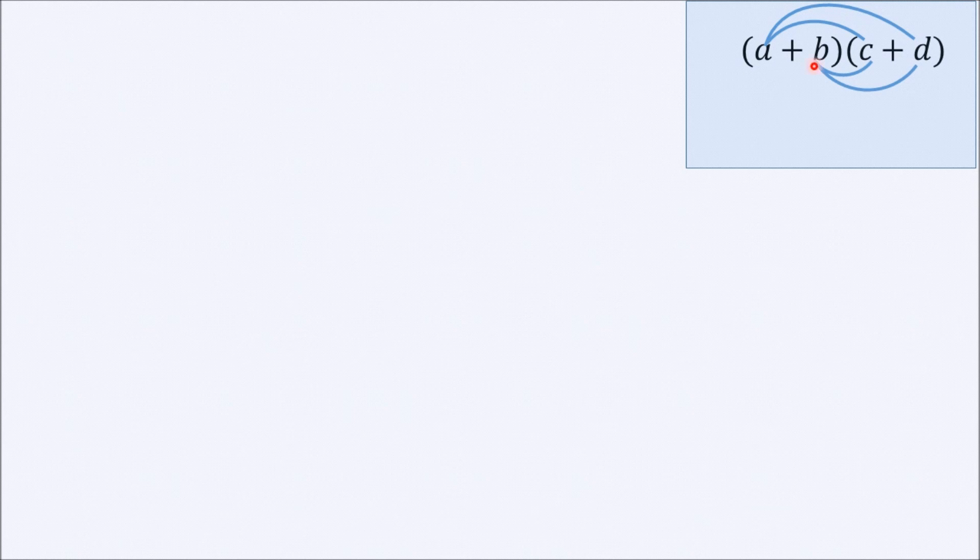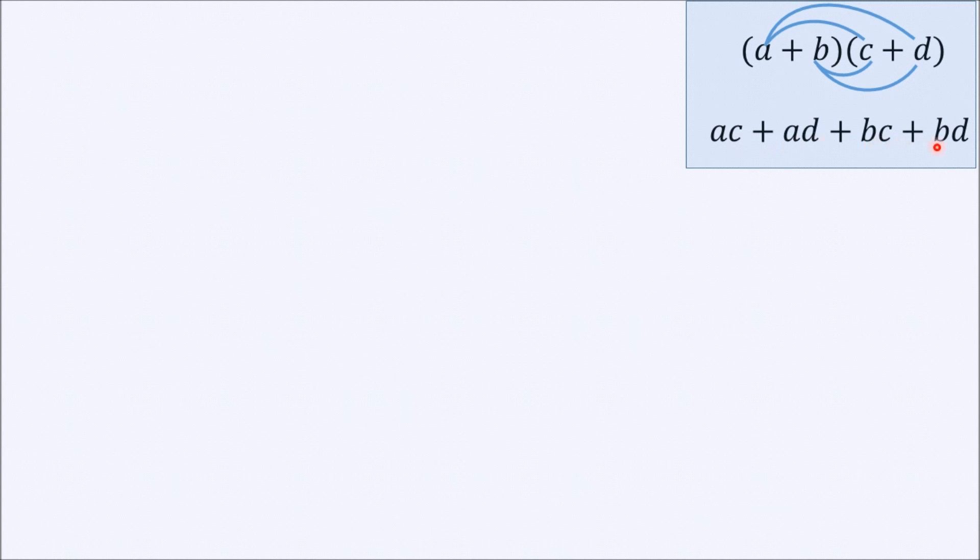Similarly, we also multiply the second element of the first bracket by the two elements of the second bracket. And therefore, the answer to this multiplication is AC plus AD plus BC plus BD.